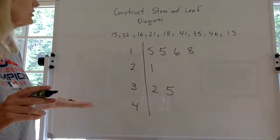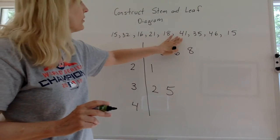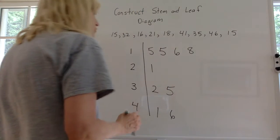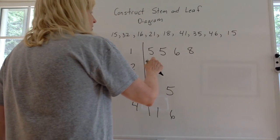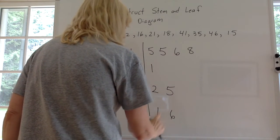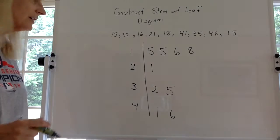Finally we do the 40s and I believe we have a 41 and a 46, so you put the 1 and the 6. We have nine numbers total, so let's make sure we got them all: 1, 2, 3, 4, 5, 6, 7, 8, 9. Yeah, I didn't mess up and miss any.